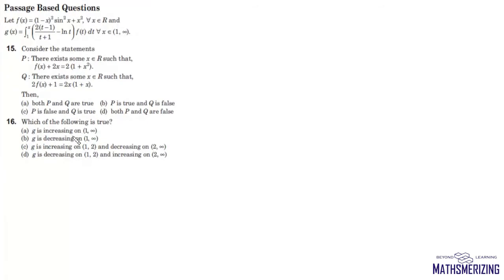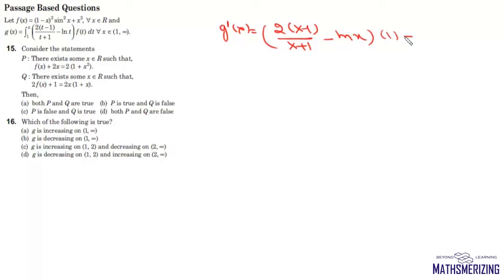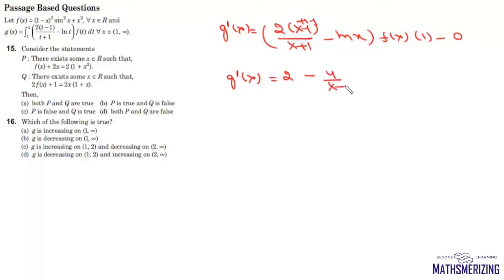For the second part, we need to find whether g(x) is increasing or decreasing, so we find g'(x). By the Leibniz rule, g'(x) equals (x minus 1 upon x plus 1 minus log x) times f(x). The derivative of the upper limit x is 1 and the lower limit is constant so it contributes 0. We can rewrite g'(x) by adding and subtracting: (2 minus 4 upon x plus 1 minus log x) times f(x).